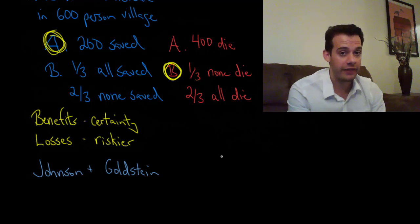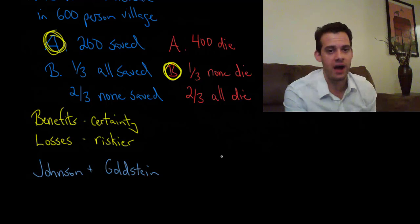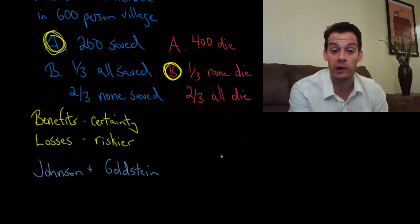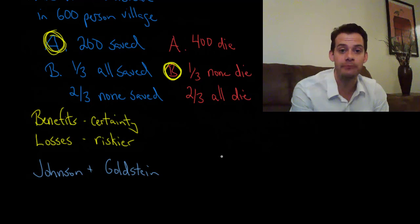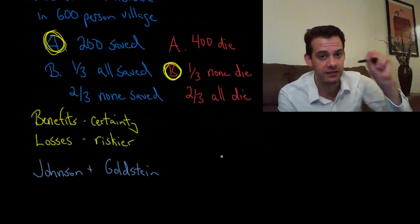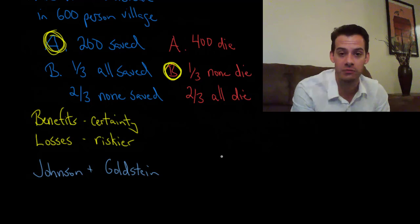So what that means is in an opt-in program you have to choose to be a part of the organ donation program. In other words, you're not in the program until you check that little box that says I want to join the organ donation program. And in an opt-out program it says you're in the organ donation program. If you don't want to be in the organ donation program then you have to check this box that says I do not want to be in the organ donation program.